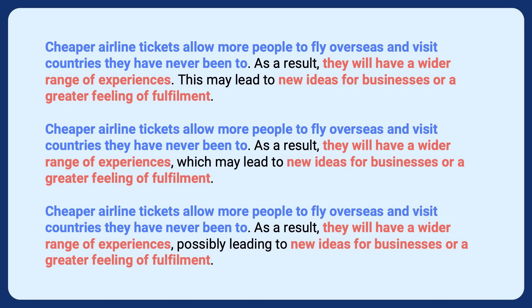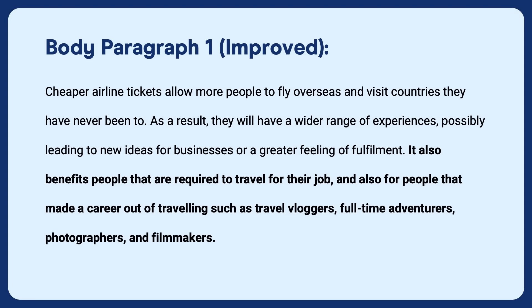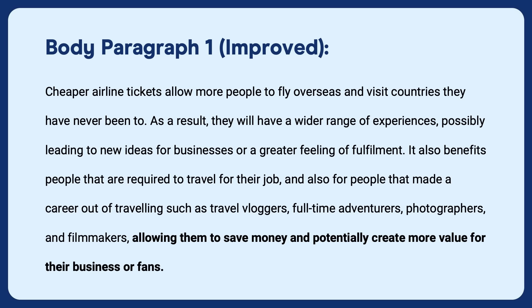We can make this a complex sentence by changing full stop + 'this' to comma + 'which,' or use a comma and a participle clause. Then we can move on and add another idea: 'It also benefits people required to travel for their job and also people who made a career out of traveling, such as travel vloggers, full-time adventurers, photographers, and filmmakers, allowing them to save money and potentially create more value for their business or fans.'